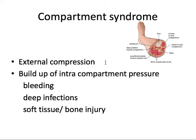One cause is external compression, like a tight plaster cast after a fracture. This can happen in the upper limb also. If there is undue pain which is not explained — because after a plaster cast the pain from the fracture should go down due to immobilization — it is very important to consider compartment syndrome and immediately bivalve the plaster and remove it.